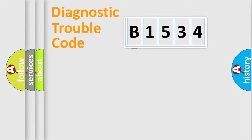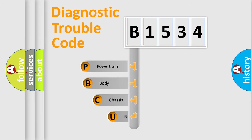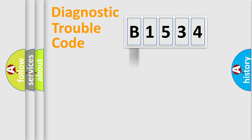Let's do this. First, let's look at the history of diagnostic fault code composition according to the OBD2 protocol, which is unified for all automakers since 2000. We divide the electric system of the automobile into four basic units: Powertrain, Body, Chassis, and Network.